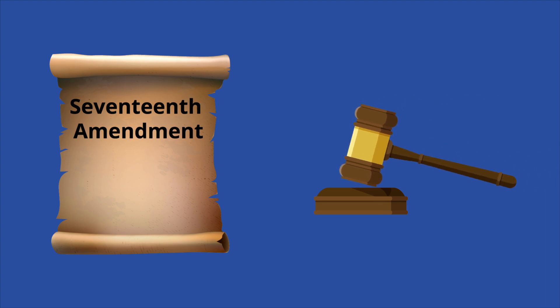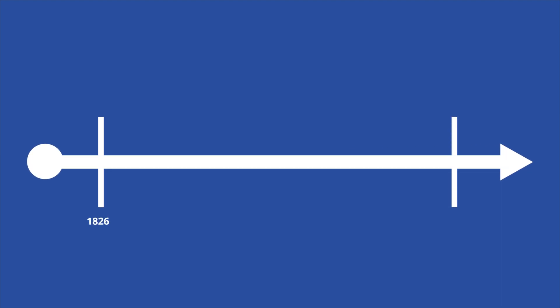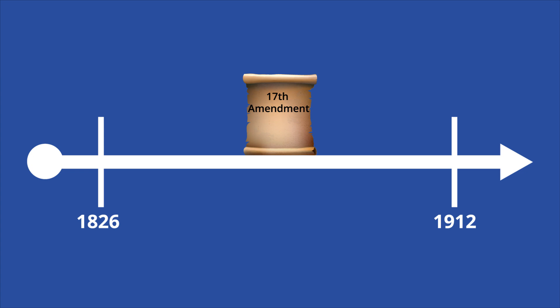There was significant opposition, but the Senate approved the amendment, largely due to the votes of Senators who had been recently popularly elected. The House passed the amendment and sent it to the states for ratification in the spring of 1912. It was officially ratified on July 15, 1913.